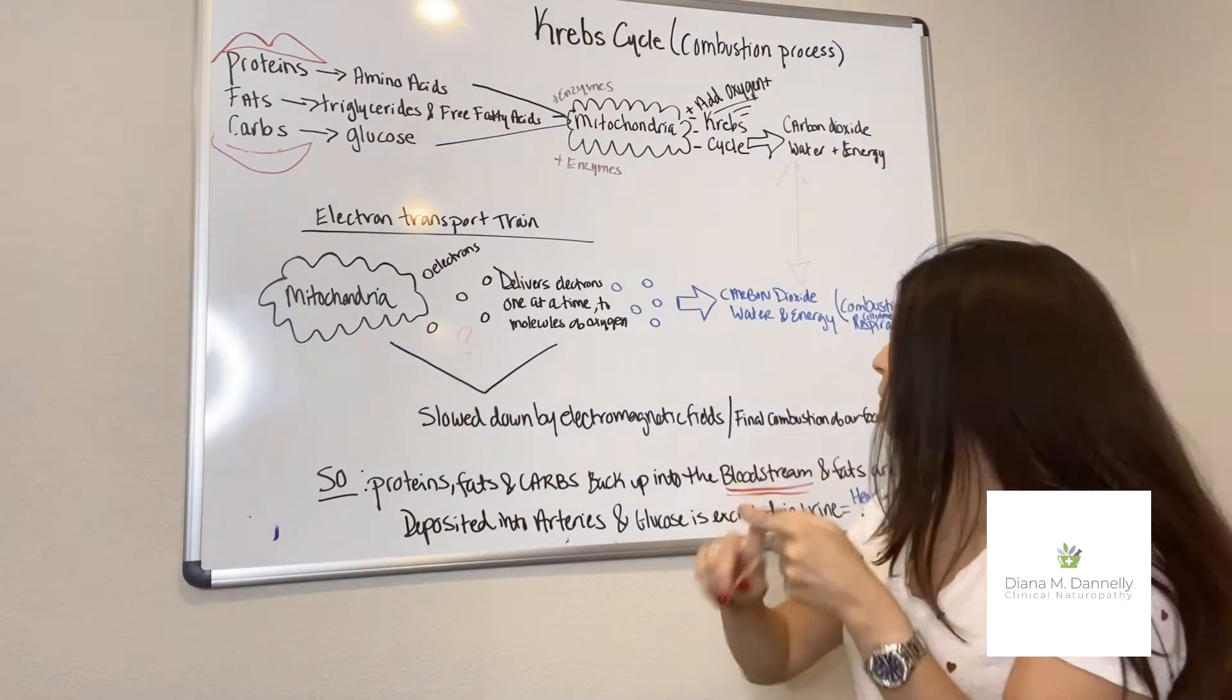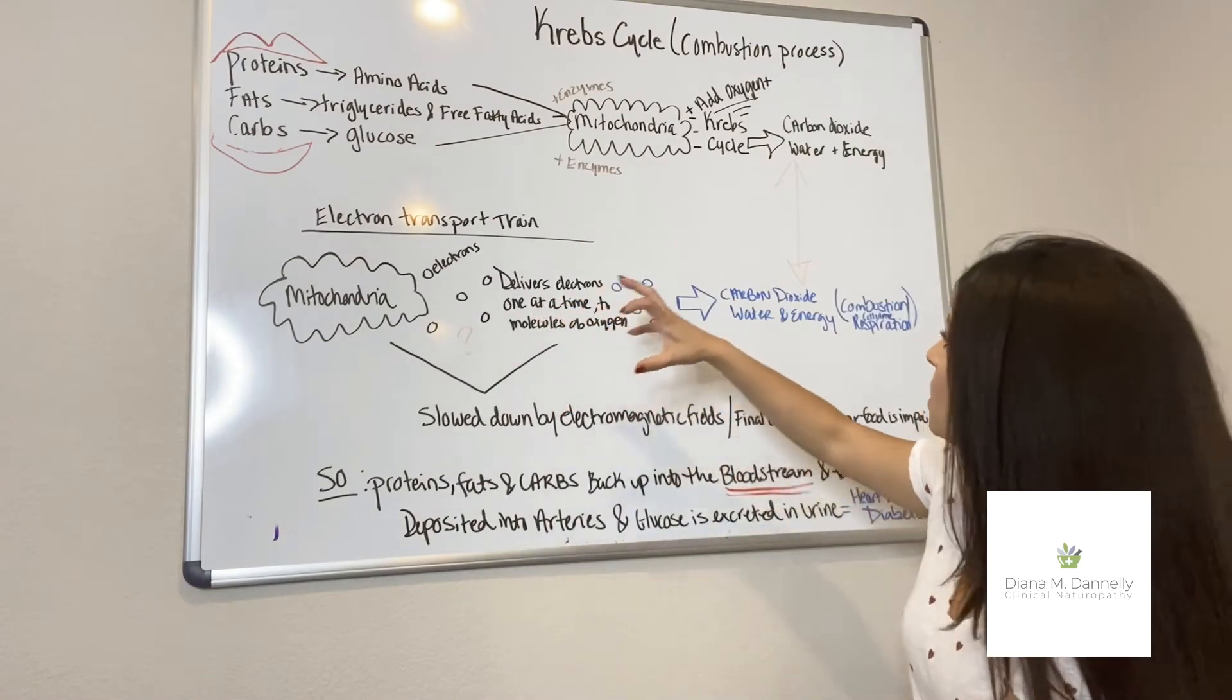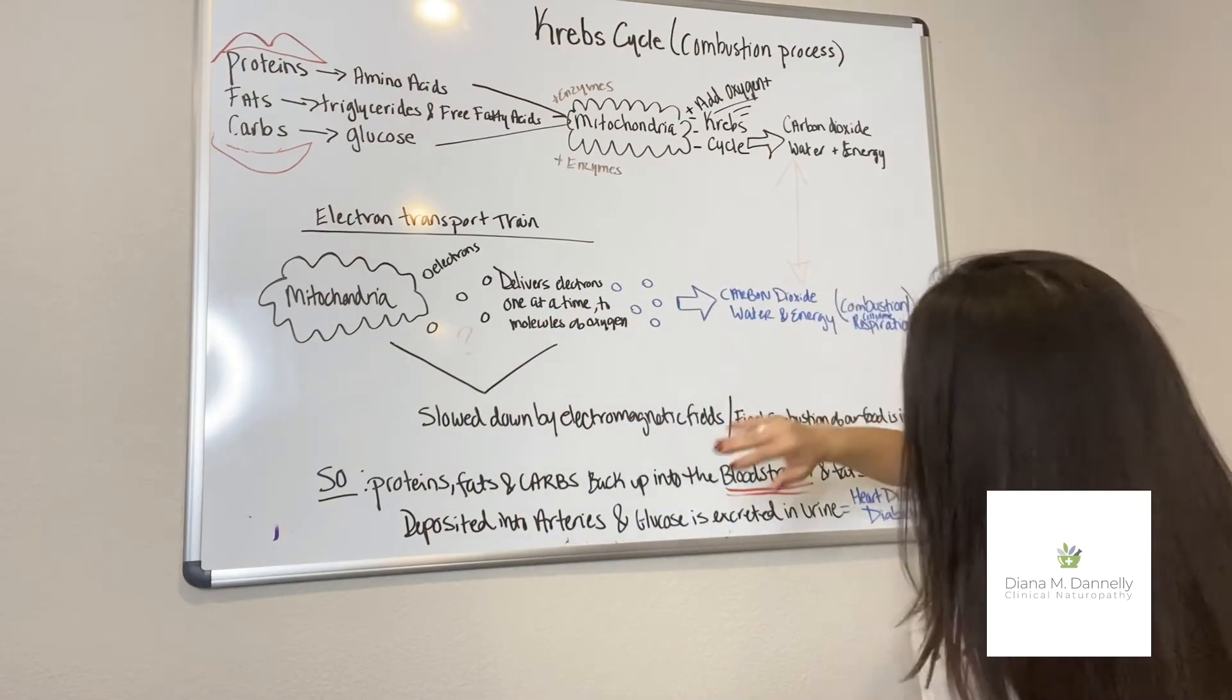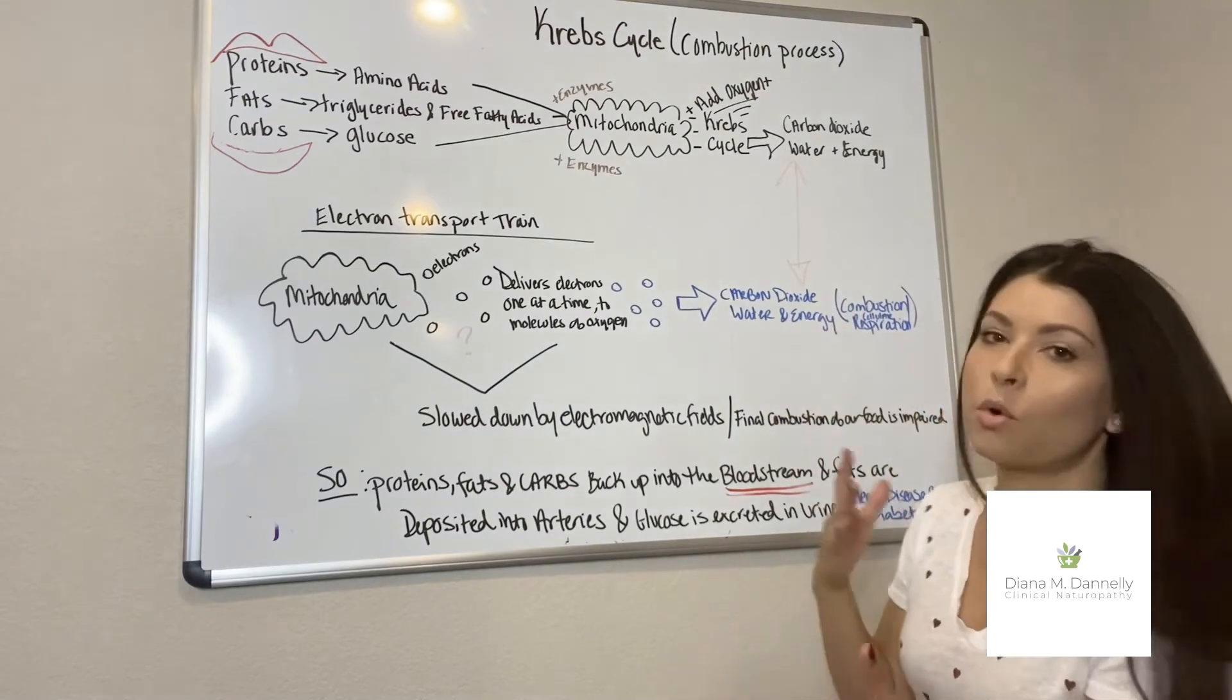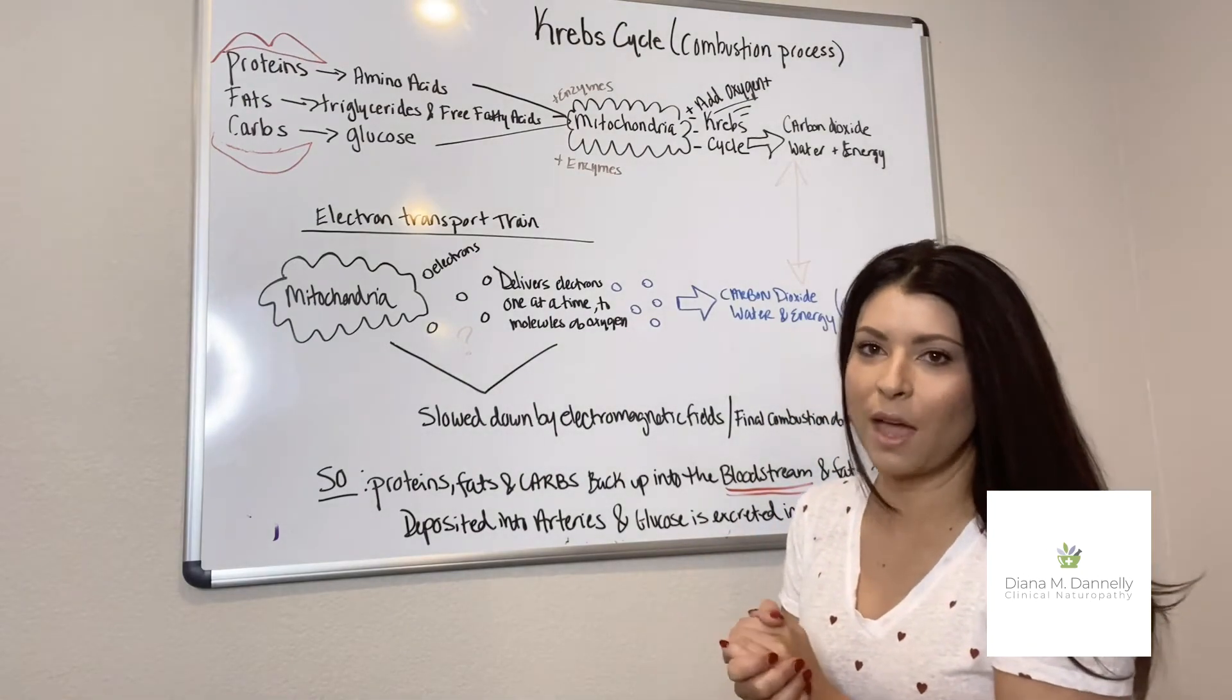So when this happens, this one-to-one ratio now allows the cell to turn this into energy in the form of carbon dioxide, water, and energy. So it's basically combustion or cellular respiration, if you've heard that term before.